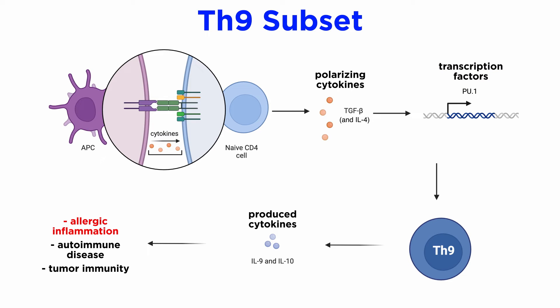Th9 cells mount immune response in response to allergic inflammation, autoimmune disease, and tumor immunity. The key effector cytokines are IL-9 and IL-10.